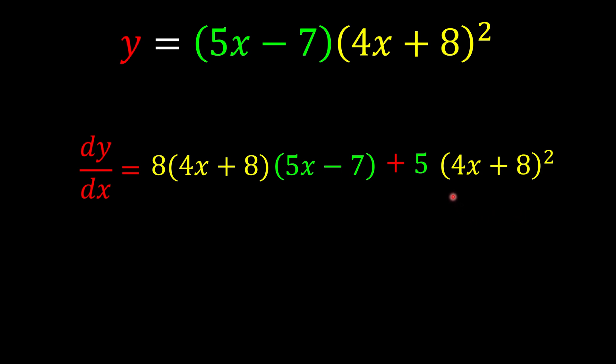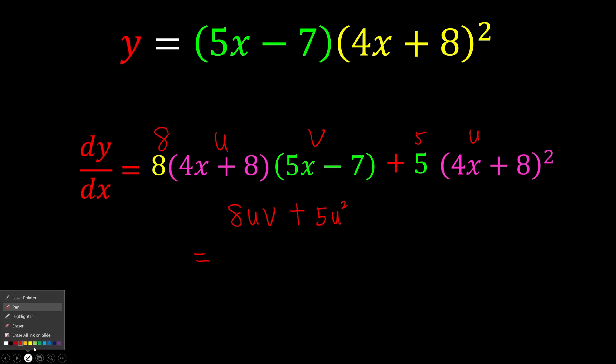Can you see that 4x + 8 and 4x + 8? So you can imagine this is 8, this is u, this is v. We have 8uv, plus 5 and the pink color is u, u². Have you learned about factorization? We know u is the common factor, so we can take out u first.